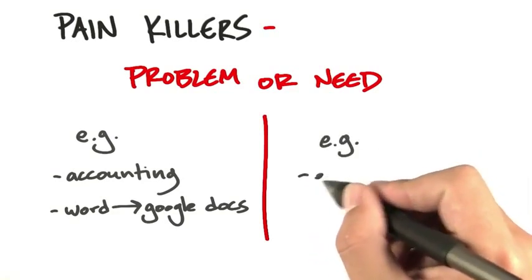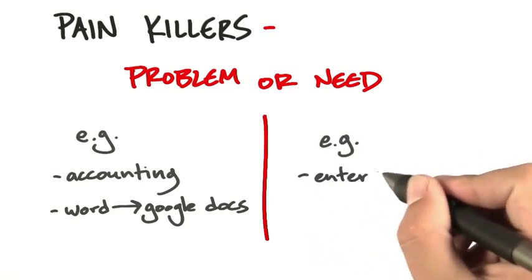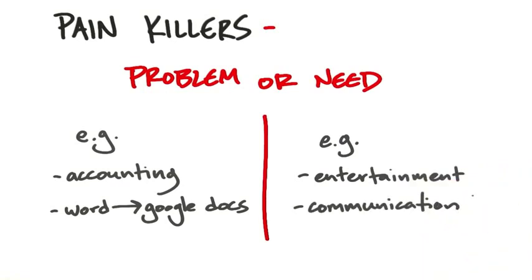Well, a need might be a need to be entertained, a need to communicate. Needs are something that are universal across all seven billion people on the planet.